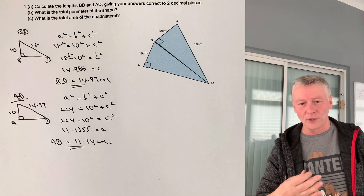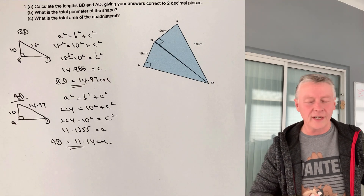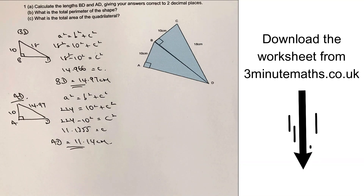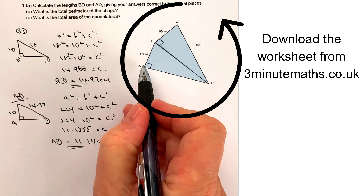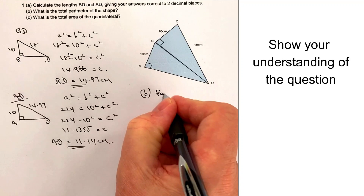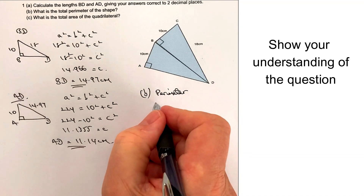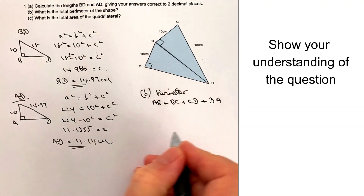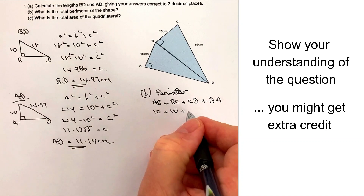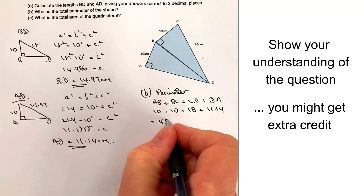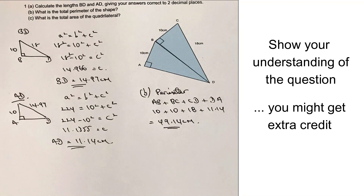The rest of this question is about working out area and perimeter — very common in these sorts of questions. This is the longest question on this worksheet. So for part B, the total perimeter of the shape is the distance all the way round. The perimeter equals AB plus BC plus CD plus DA, which gives us 10 plus 10 plus 18 plus 11.14. When I add all of that up, I get 49.14 centimetres.